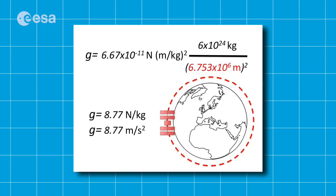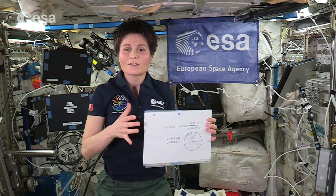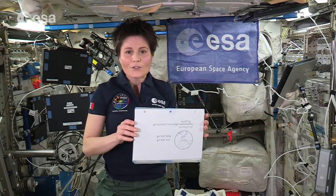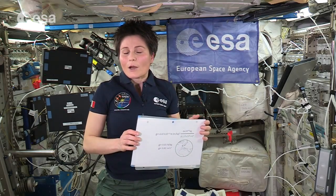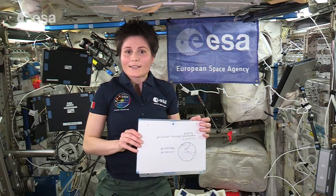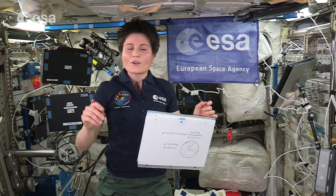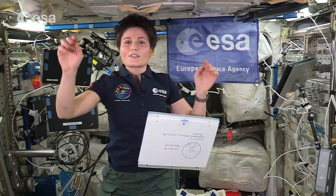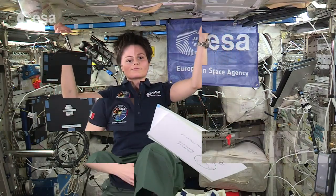If we do that we get a value for small g roughly equal to 8.7. So on the surface of the Earth we have 9.81, which is about 10% bigger. So the force of gravity, the pull of gravity here upon the International Space Station is indeed a little bit smaller, but not that much. So if there is the force of gravity up here, why am I floating?